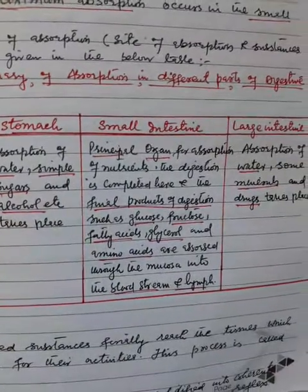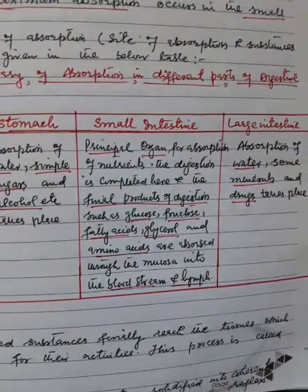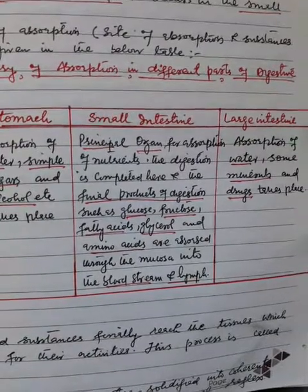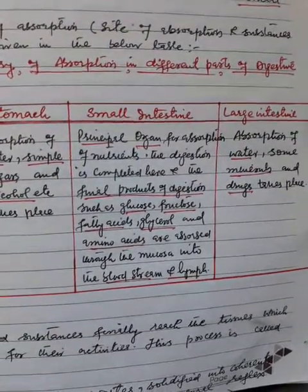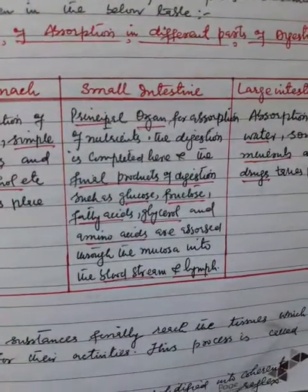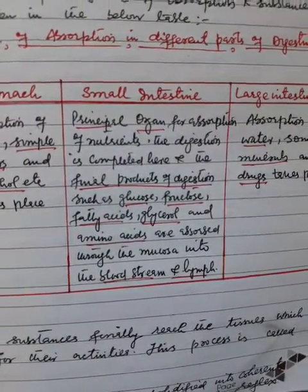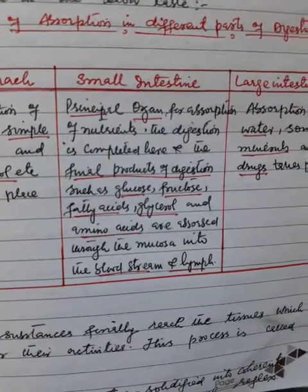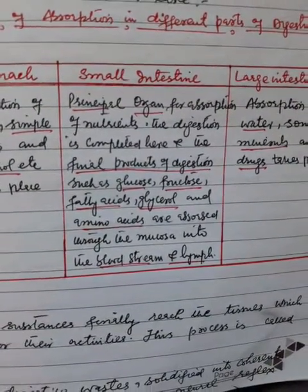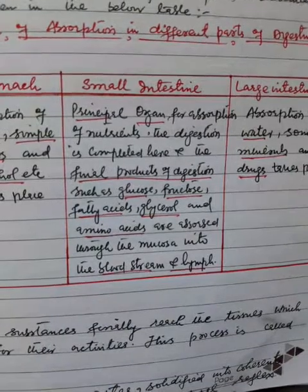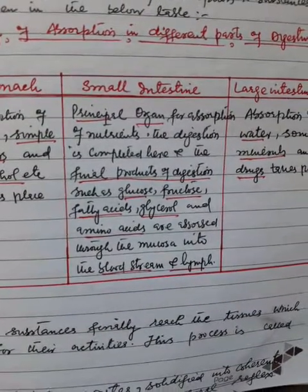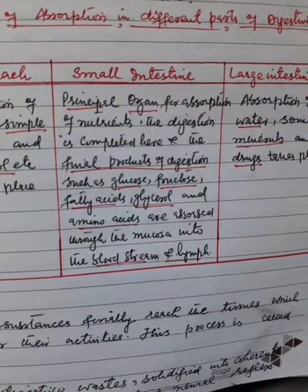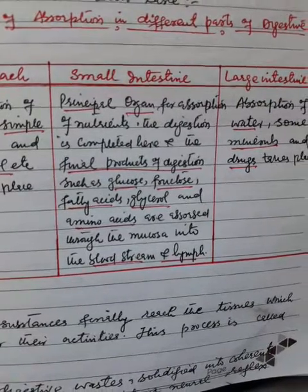The small intestine is the principal organ for absorption of nutrients, and digestion is completed here. The final products of digestion — such as glucose, fructose, fatty acids, glycerol, and amino acids — are absorbed through the mucosa into the bloodstream and lymph.